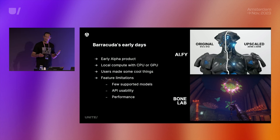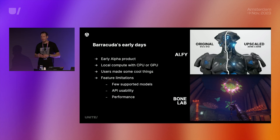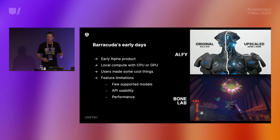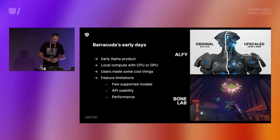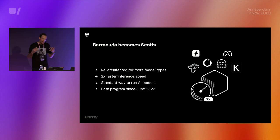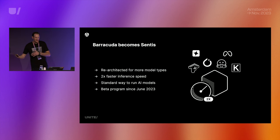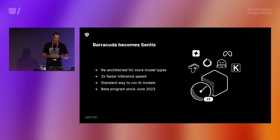There were some pretty big limitations with Barracuda. Only a few model types were supported — things like reinforcement learning models and some image-based models. Usability was also an issue; the API was quite different from PyTorch, the leading AI model development tool. And lastly, performance was a bit of an issue. There was overhead using the package, and the architecture limited what our team could do for performance improvements. Based on feedback from the alpha community and limitations we knew about, we realized we needed to re-architect the product completely. So we threw it out and re-architected the entire product, gave it a fun new name, and Sentis was born.